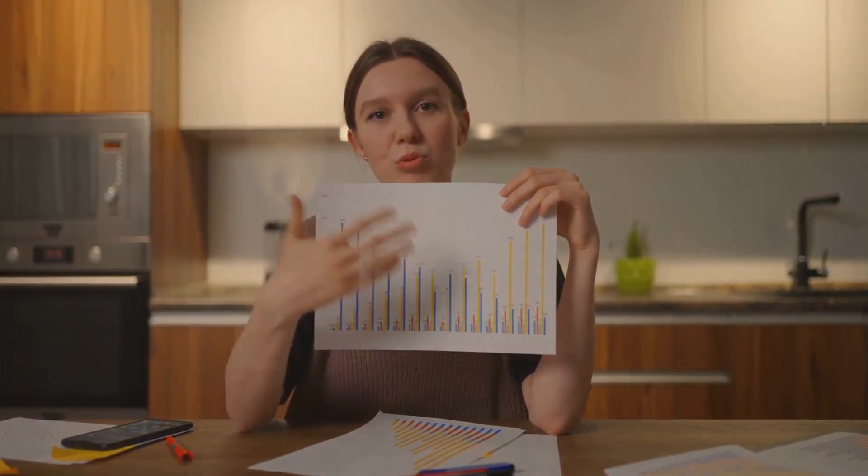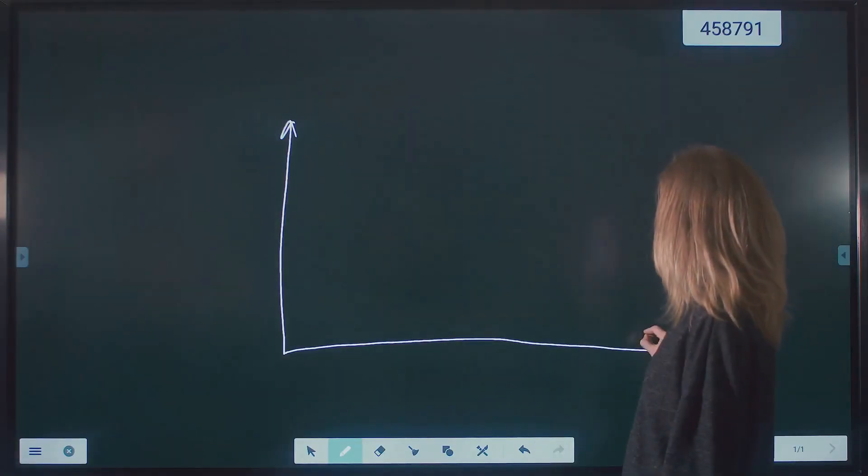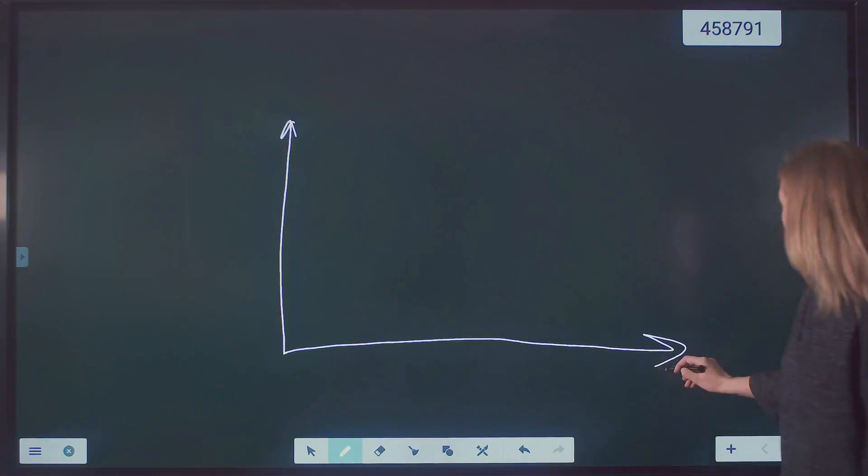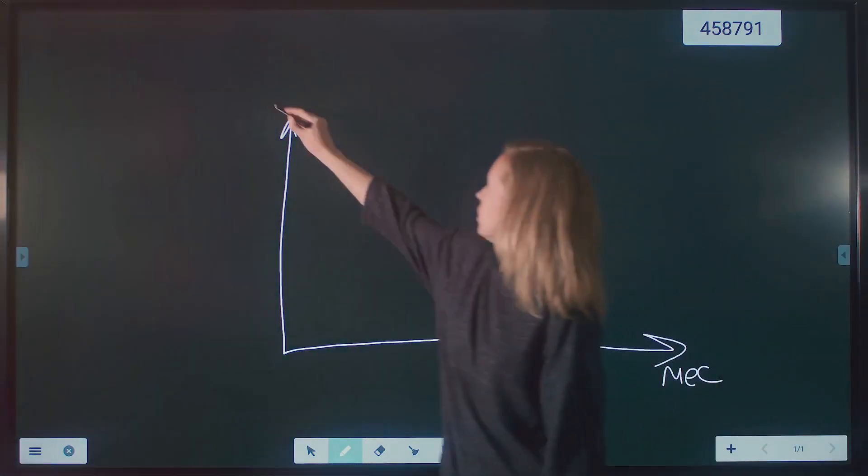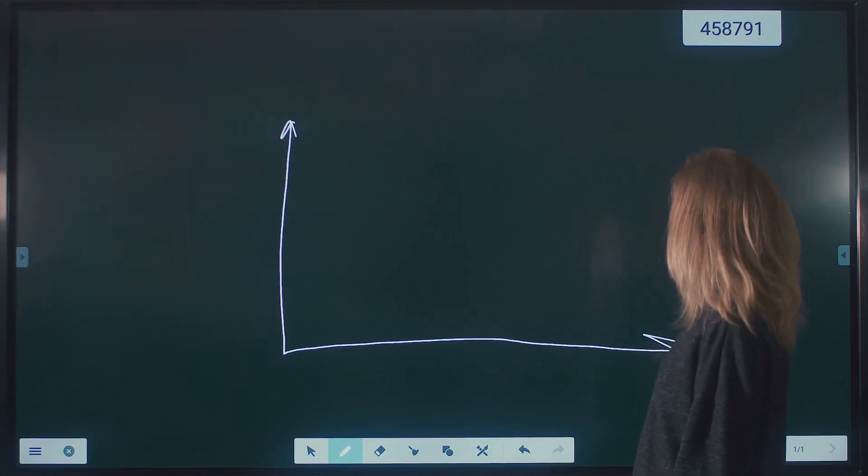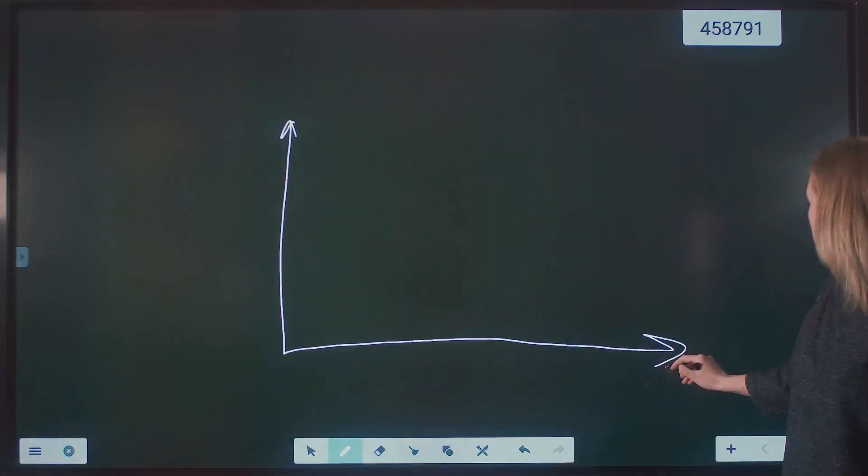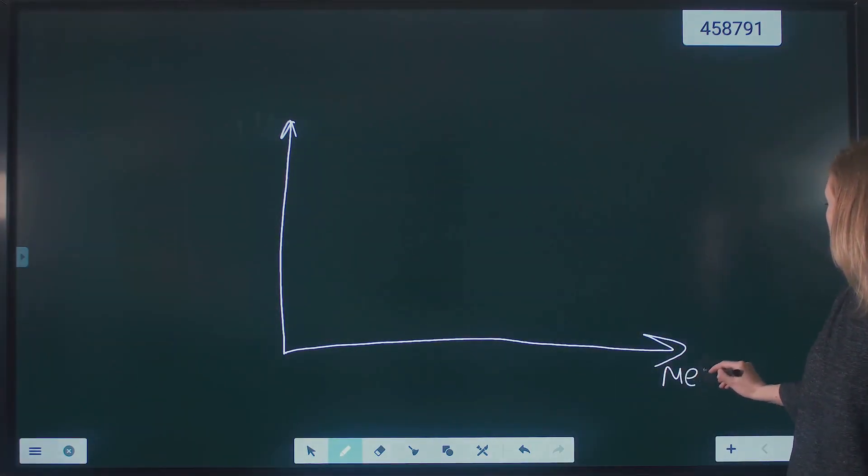The main idea behind LOESS is to fit a smooth curve to the data by locally averaging the points. This means that instead of fitting a single global model to the entire dataset, LOESS fits multiple local models to different subsets of the data. Each local model is fit to a subset of the data that is close to the point being estimated.